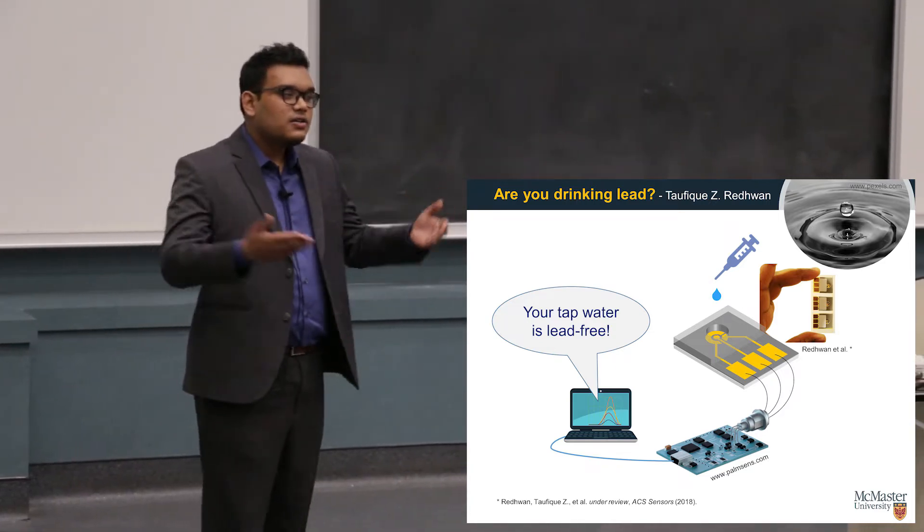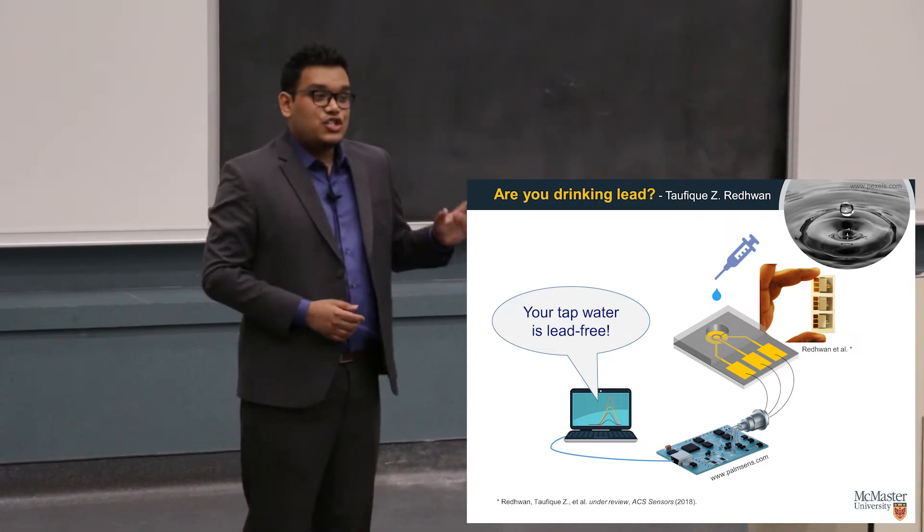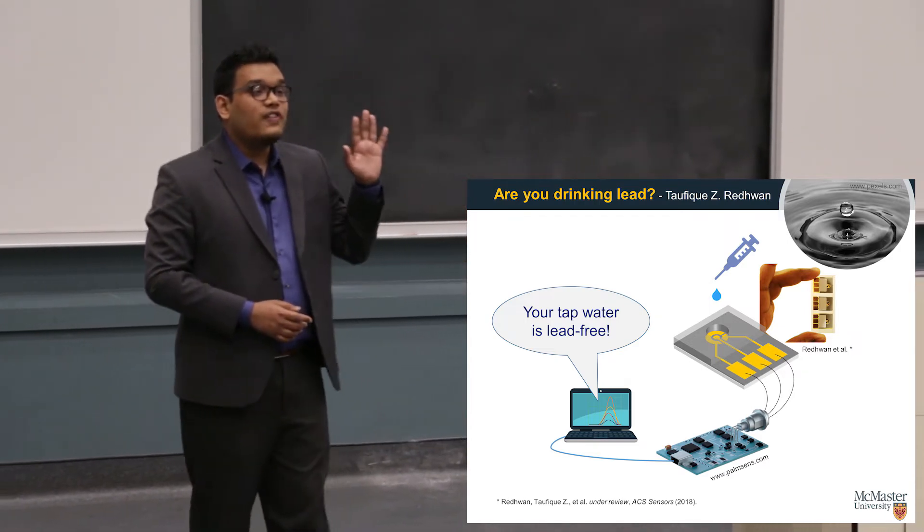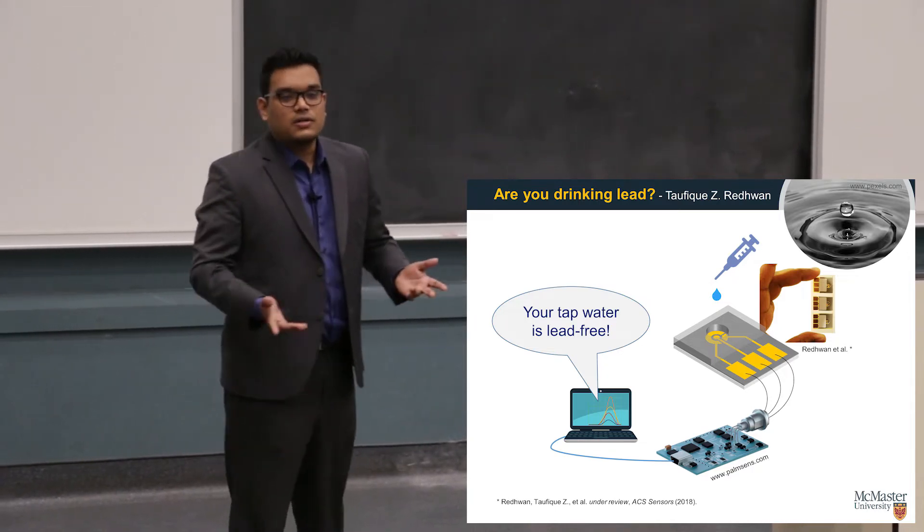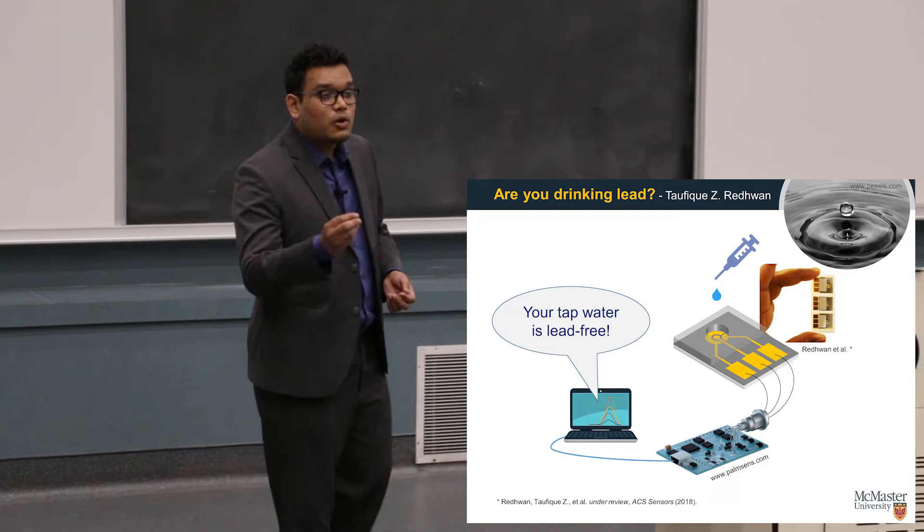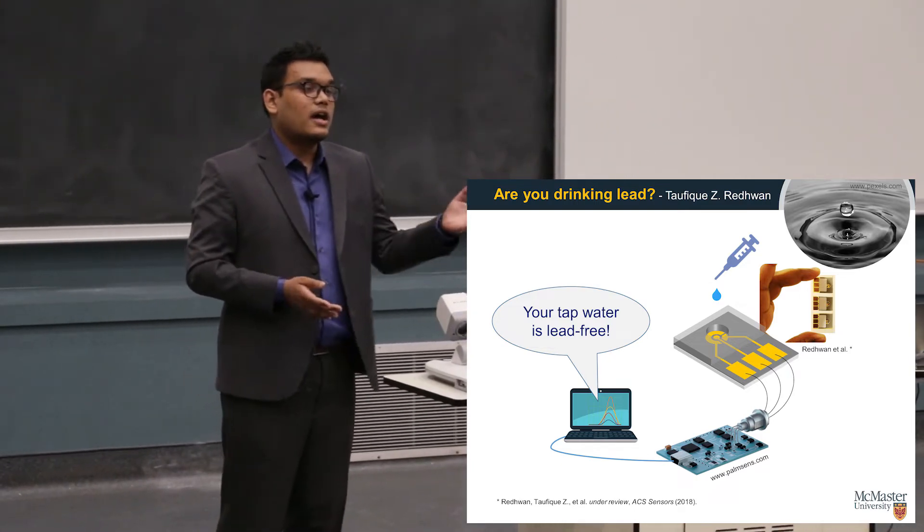Toxic lead leaches directly into your drinking water and enters your body. An average child's body absorbs about four to five times more lead than an average adult. This is not without consequence. Children become more aggressive, and they tend to suffer from neurological disorders and lower IQ.